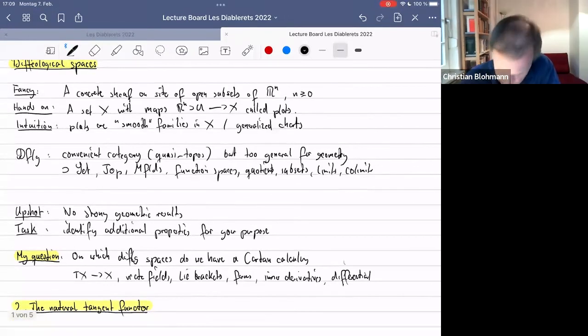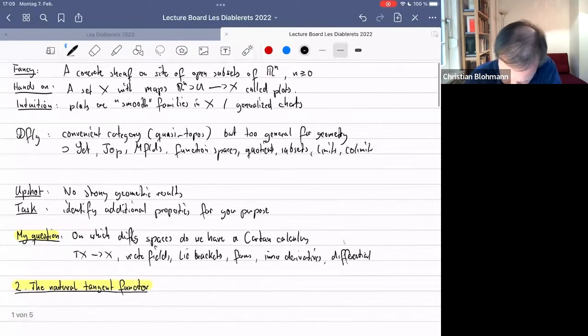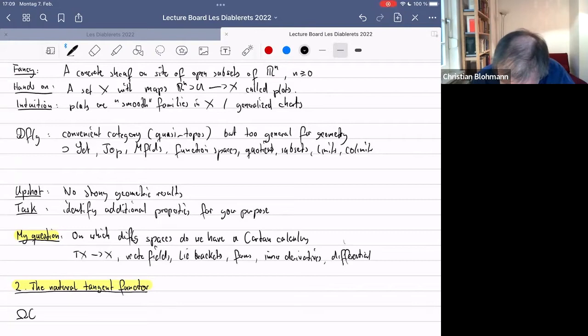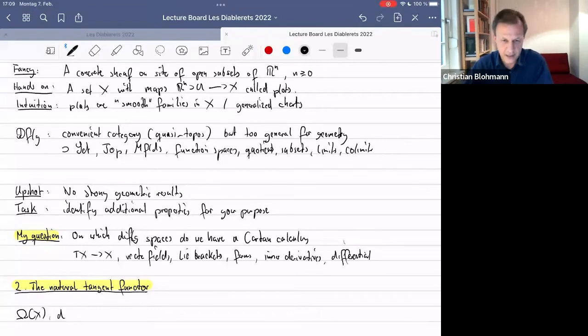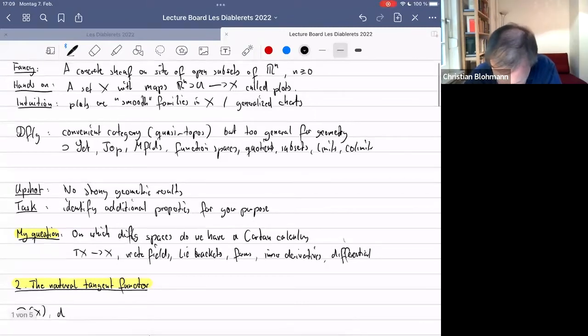So now you turn to the literature and see what people have come up with. So the good news is, the de Rham complex, that's very straightforward and canonical. Everybody agrees on what this is. This is easy, straightforward.